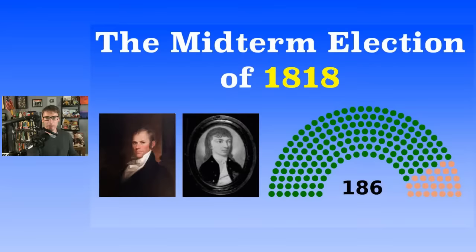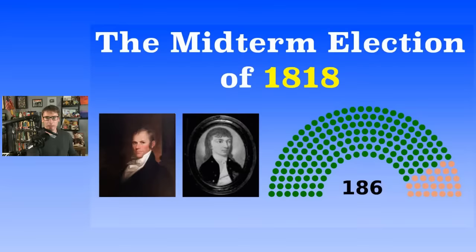Let's look at the details for 1818. The Federalist decline did happen, though they picked up seats here and there. In the Senate, the Federalists had 13 seats — 42 seats total, 22 needed for a majority. The Democratic-Republicans gained three seats in the 1818 midterms; the Federalists lost three. But the Federalists still had a strong minority voice.